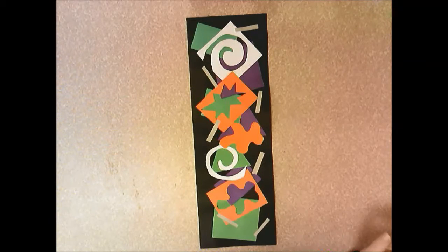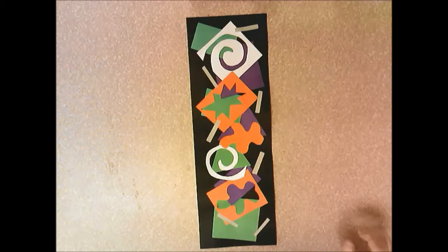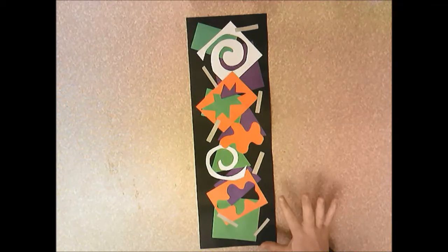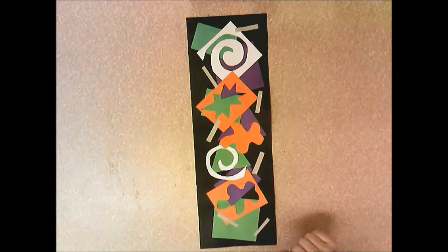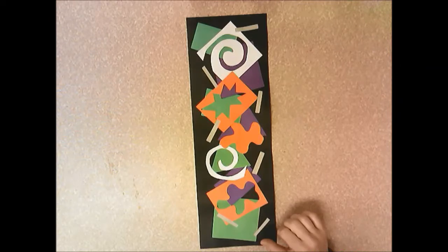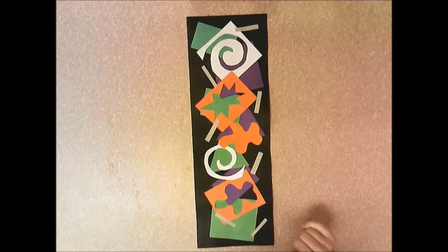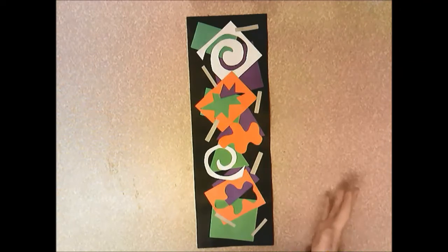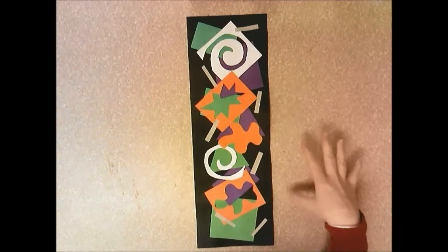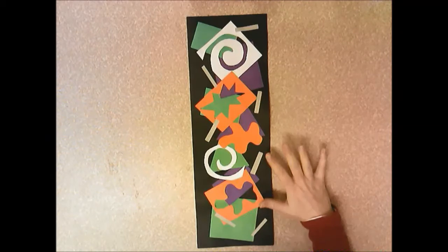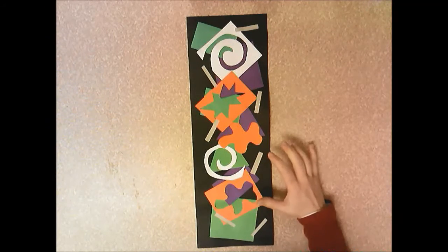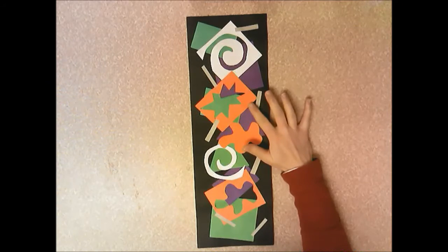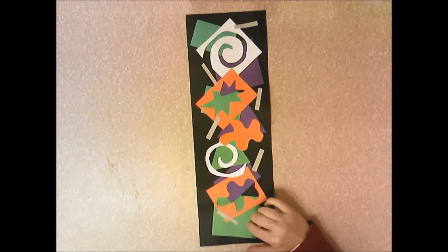Hello, so today we're going to start this Matisse collage. It's based on Henry Matisse's picture, Beasts of the Sea, and we're going to use cut paper to create the piece. In Matisse's Beasts of the Sea, he had two vertical pieces and we're just going to do one vertical piece, and we're going to be using organic or freeform shapes and then some geometric shapes as well.